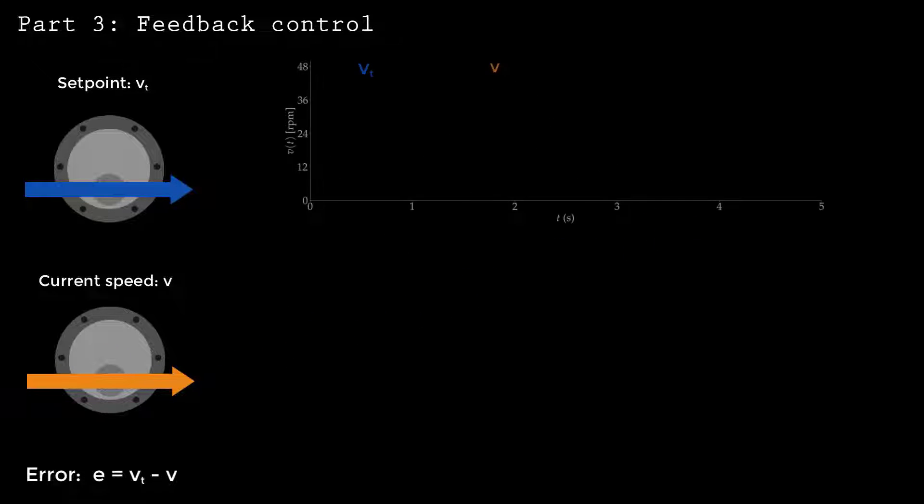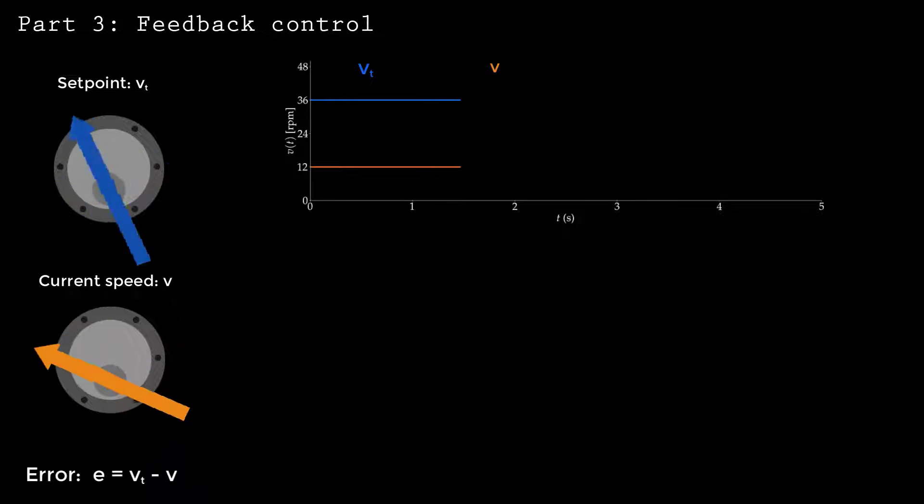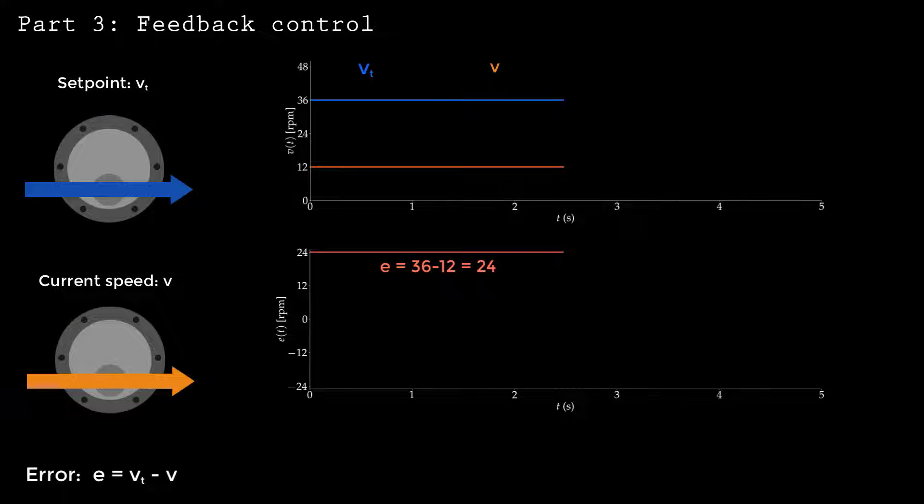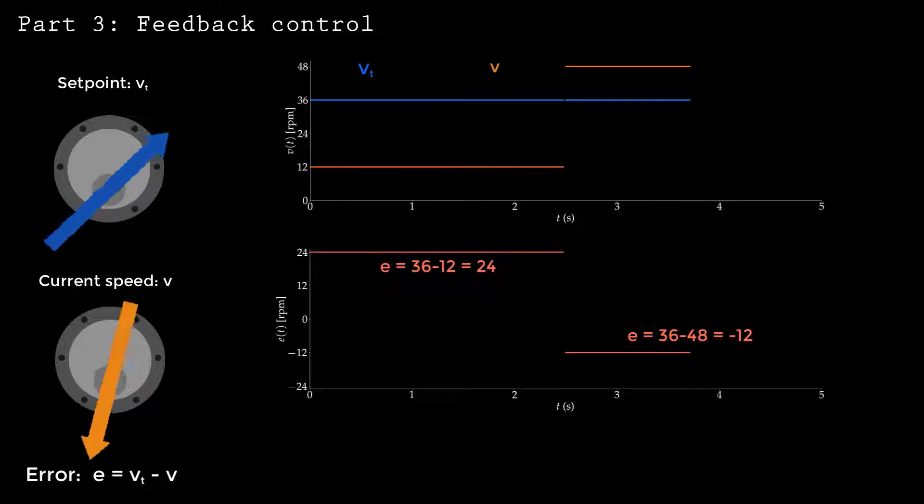Consider the case where the current speed is below the set point. The error is positive. In this example, the error is 24 RPMs. On the other hand, if the current speed is above the set point, the error is negative.